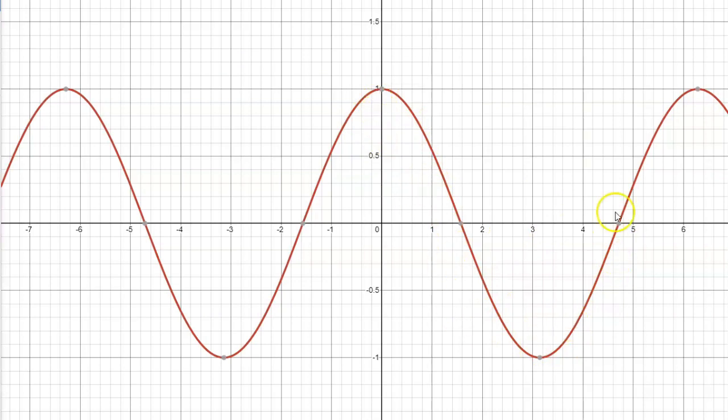We have our peak at 0 and at 2 pi. We have our minimum at pi. We are going to reciprocate. So all these output values are going to be reciprocated.